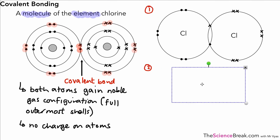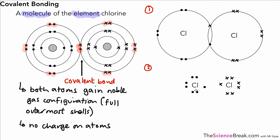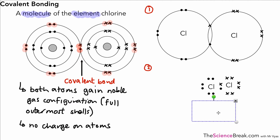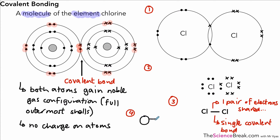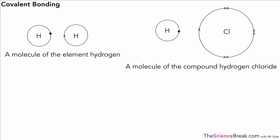We tend to draw covalent bonds in a simpler way — just drawing the outermost shell to show the electrons in that shell, writing 'Cl' in the middle to identify the atoms. That's the first method. A second way is to draw the electrons without even drawing the shells, using dots and crosses to show where the electrons come from for each atom — remember they're all electrons, just drawn differently. A third way is to draw a line between the two atoms, representing a single covalent bond — one shared pair of electrons. A fourth way is to draw each atom as a ball connected together, giving us Cl₂.